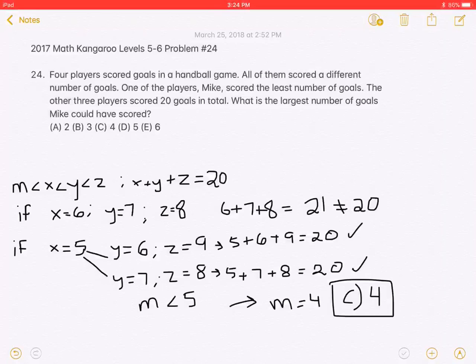In conclusion, if M has to be less than X, which is 5, the greatest possible value of M is 4, which is answer choice C.